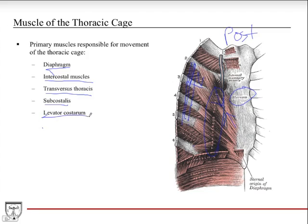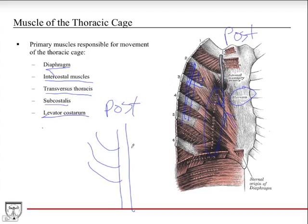Then you have the levator costorum. Looking at a posterior view, if you have the spine come down and then the ribs fanning out on either side, the levator costorum are very small muscles that go from the thoracic vertebrae down to the ribs. They don't serve a huge function, but they're thought to help with forceful inspiration — taking a deep breath. Not super high yield.